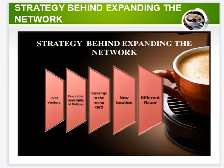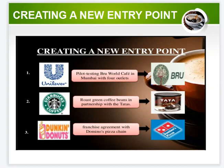Strategies for expanding the network include joint ventures, favorable government policies, revamping the menu, opening new locations, and offering different flavors. For creating new entry points: establishing Blue Valley Cup in Mumbai with four outlets, roasting green coffee beans in partnership with Tata, and entering into an agreement with a dominant food service chain.